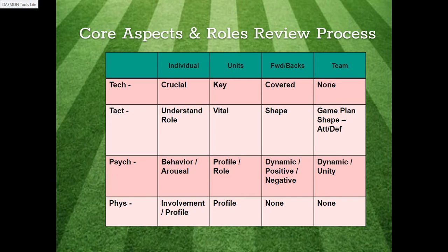The psychological dimension covers behavior and arousal level. Some people are high arousal, others are low — the low ones we need to bring up, the high ones we need to bring down to find that sweet spot. At the team level it's the team dynamic and unity: are fingers being pointed and people blaming each other, or are we helping each other? A good team environment is very hard to beat. For the physical aspect it's your involvement and your profile. There's no team-level physical review needed — it applies at the individual and unit levels only.